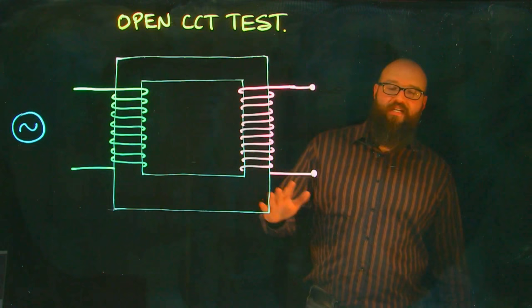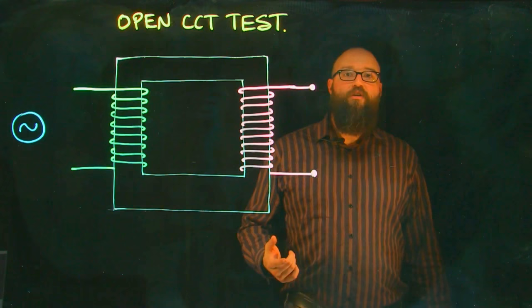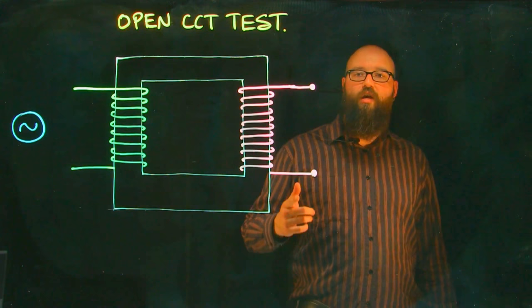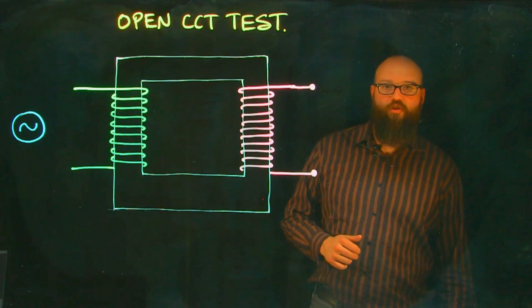As the name indicates, we're going to leave the secondary side of our transformer open-circuited so that we don't end up with any secondary current. As soon as we have secondary current, it immediately starts to increase the value of primary current through transformer action.